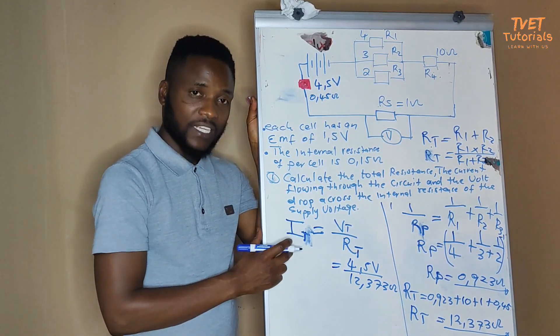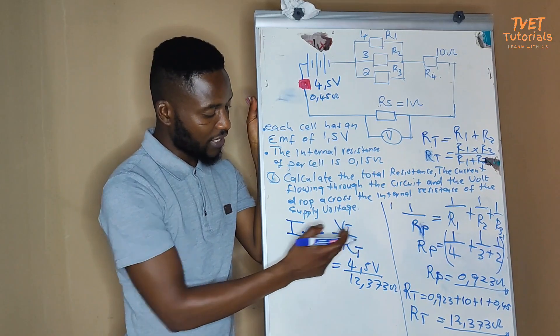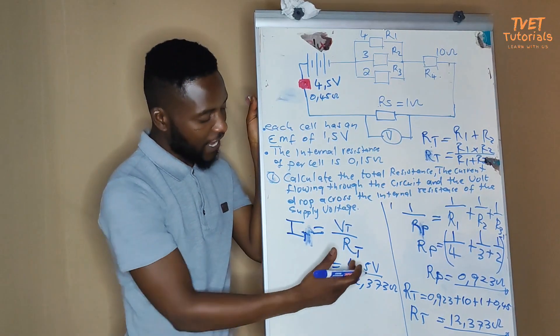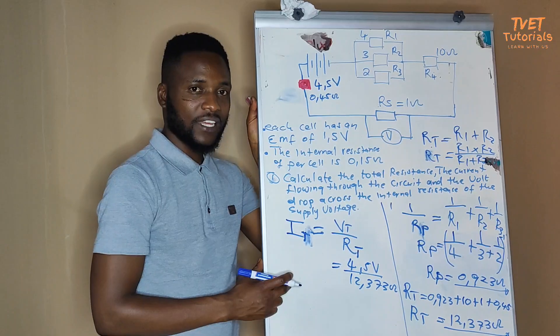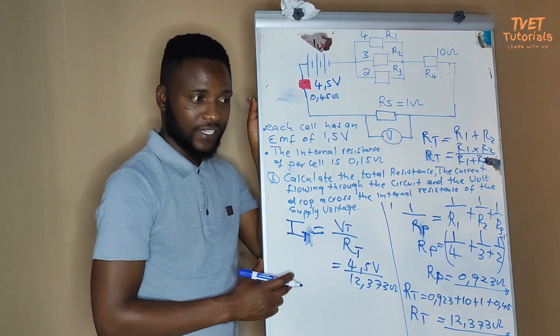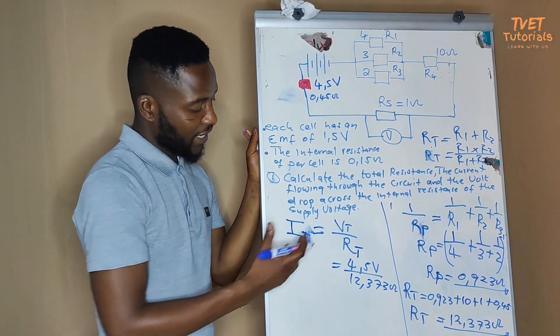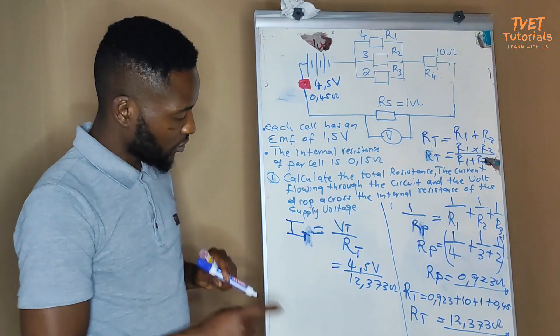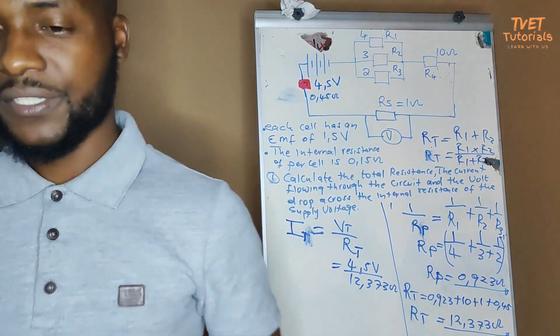You can see that to calculate the total current, we used the total supply voltage and the total resistance of the circuit. So we can punch our calculator to see the magnitude of IT.